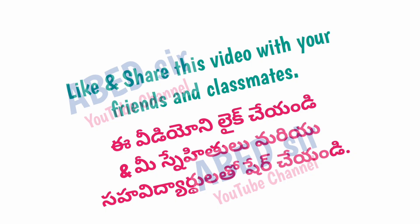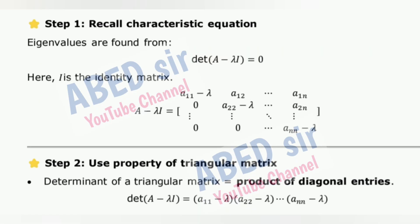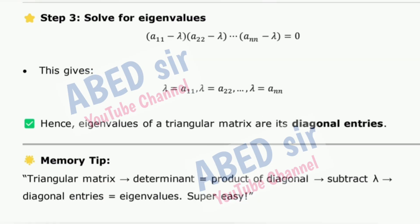Next important short question 5: Prove that eigenvalues of a triangular matrix are the entries on its main diagonal. Let A be an n×n upper triangular matrix. Step 1 — Recall the characteristic equation: eigenvalues are found from det(A − λI) = 0. Step 2 — Use the property of triangular matrices: the determinant of a triangular matrix equals the product of its diagonal entries. Step 3 — Solve for eigenvalues. Hence, eigenvalues of a triangular matrix are its diagonal entries. Memory tip: Triangular matrix determinant equals product of diagonal — subtract λ from diagonal entries to get eigenvalues.